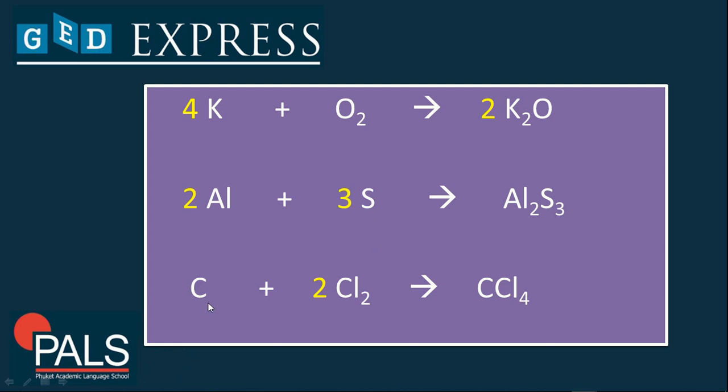On this last equation, you have one carbon on the reactant side and you have one carbon on the product side. Now for chlorine, you just multiply two times two, or you put 2 over here, so that there would be four chlorine on the reactant side, because on the product side there are four of it, that makes them balanced.